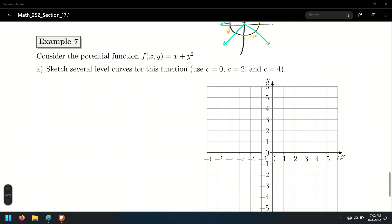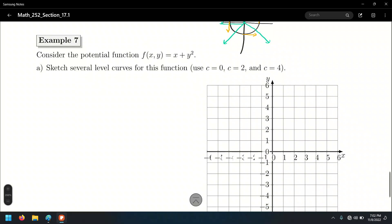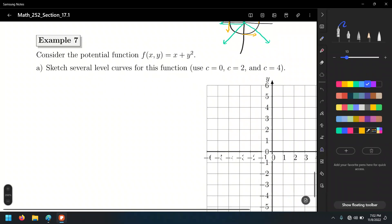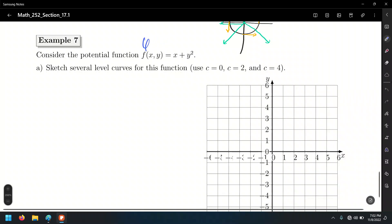Last exercise right here. We're given a potential function. That potential function, we usually call it f of x, y, but also we call it phi. We call it phi of x, y. I'm going to make it look like a phi. Phi of x, y.